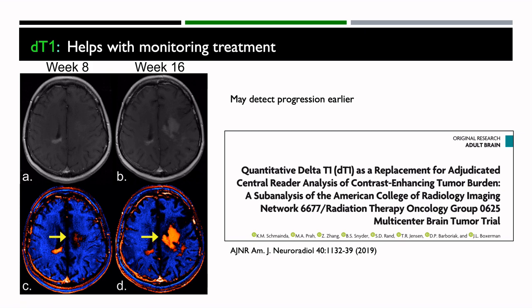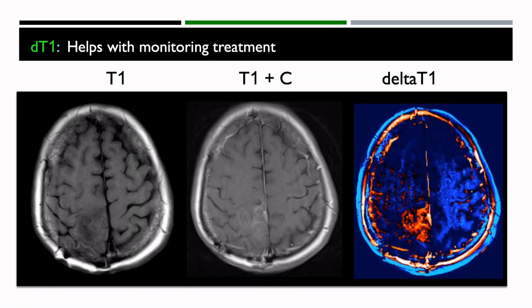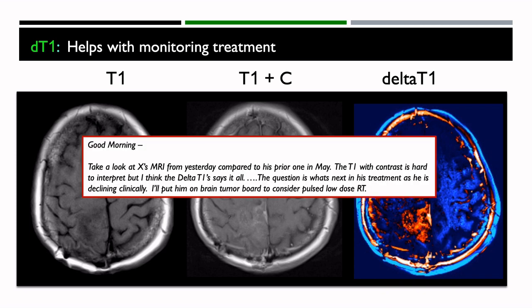This was reported in a paper analyzing this multicenter study. We find it is very helpful on a daily basis with monitoring treatments. Here's an example of a pre and post contrast T1 — again sort of hard to see that enhancement, but Delta T1 makes it clear. That was the response of the neuro-oncologist who said the T1 with contrast is hard to interpret, but the Delta T1 says it all, and then goes on to help decide the treatment need.